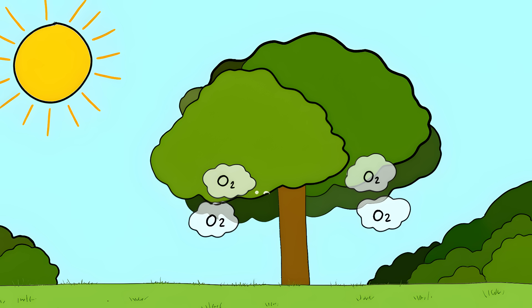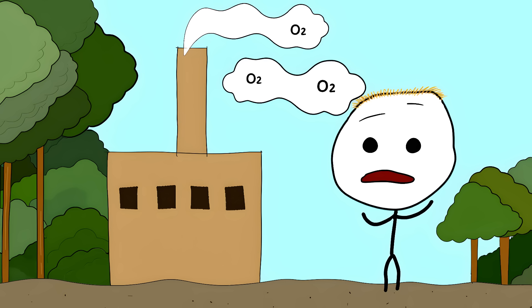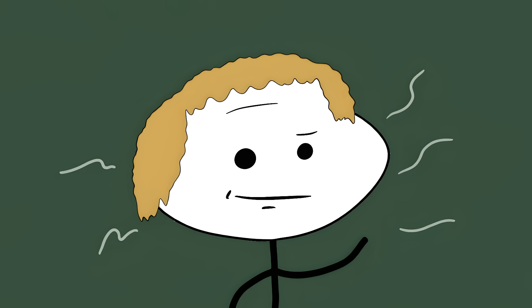Amazon Rainforest Oxygen Production. People say the Amazon produces 20% of Earth's oxygen, like it's some giant green air factory pumping out fresh oxygen for us to breathe. But that's not how it works at all.